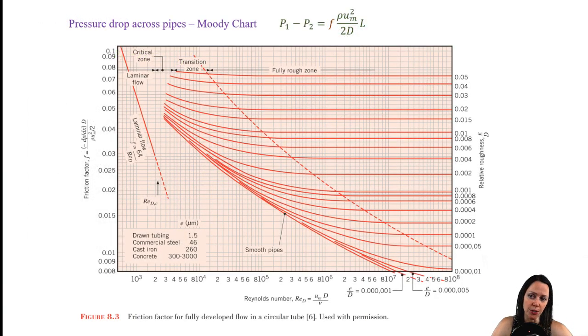The Moody chart is really convenient because we can get the friction factor and then plug it into this equation to get the pressure drop. So let's look at what we have here. On the left-hand side, we have the friction factor. Note that that scale is not linear, it's logarithmic. On the x-axis, we have the Reynolds number.